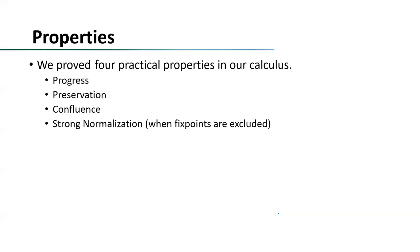So here are all of our reduction rules. We omitted the typing rules here, but you can find them in our paper. With all the typing rules and reduction rules, we can prove the following properties: progress, preservation, confluence, and strong normalization — with fixed points excluded. All these properties are very important for our programming language. This concludes the introduction to our calculus. Next, we will focus on the three main theorems.